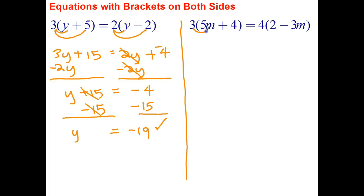Let's go ahead and use our distributive law on both sides. 3 times 5m is 15m, plus 3 times 4 is 12. Equals, I'll change that to plus the negative. 4 times 2 is 8, plus 4 times negative 3m is negative 12m.